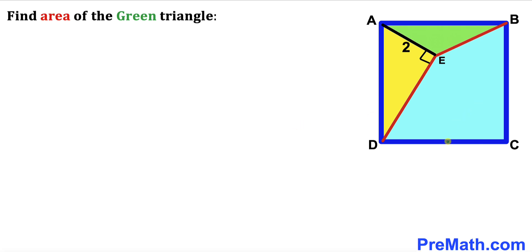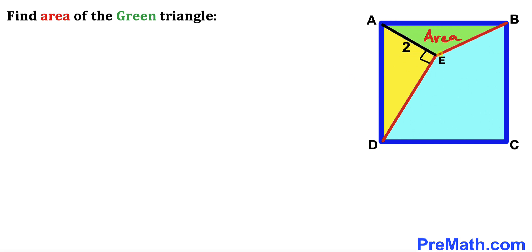Welcome to pre-math. In this video we have got this blue square ABCD along with this point E inside this square, and as a result we get these two triangles. The first green triangle is ABE and the other yellow triangle is the right triangle AED. Moreover, this segment AE is two units and our task is to calculate the area of this green shaded triangle ABE.